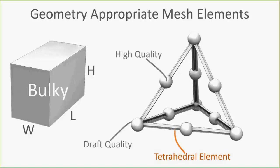A high-quality element adds what we call mid-side nodes. If we hold the base and push the top, we'd actually see some bending take place, because adding another nodal point turns that into a quadratic equation — giving us a better understanding of displacement. Draft quality is for large models where you want to do a sanity check to make sure everything is moving as expected. Then you run as high quality to get more accurate results.